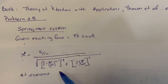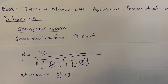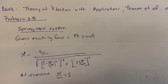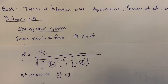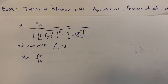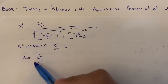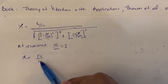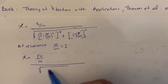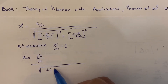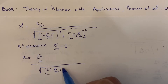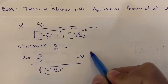At resonance, W over Wn equals 1 because both frequencies are the same. So if we substitute this in, the amplitude will be equal to F0 over k divided by the square root of (2 times damping ratio times W over Wn), and because this is squared we get the simplified resonance expression.